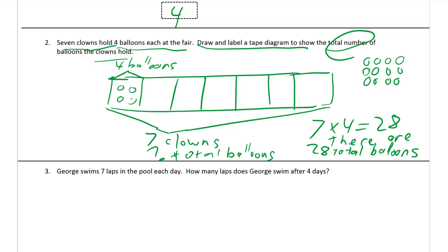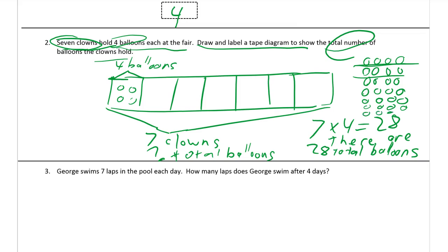We need seven rows — each row is a clown — and there are four balloons per clown. So here's one clown with four balloons, then the next clown, and so on. We need seven of these and they all have four: one, two, three, four, five — row six, and row seven.